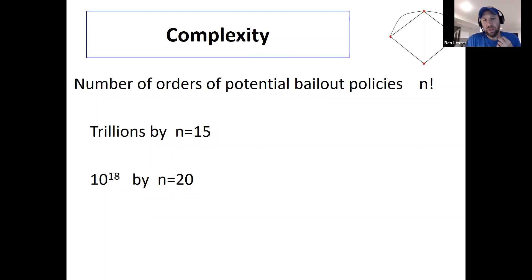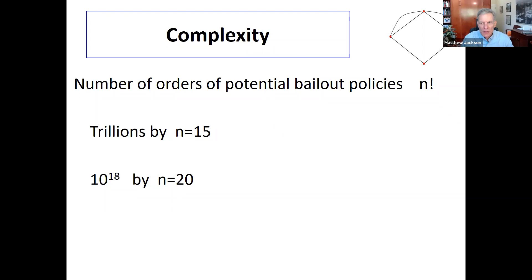A related question: have you thought about simple mechanisms like a lending facility at some price, and how close you can get to the first best with such simple facilities? Some parts of these problems you can solve fairly simply. The harder part is when you've got core dealers that all owe each other and you're not sure what's going on. The easier part is when you have peripheral banks that just owe a couple of people money. There can also be incentives for banks to bail each other out — Safra Kanek has looked at some of that — and reasons for entities other than the government to make loans.